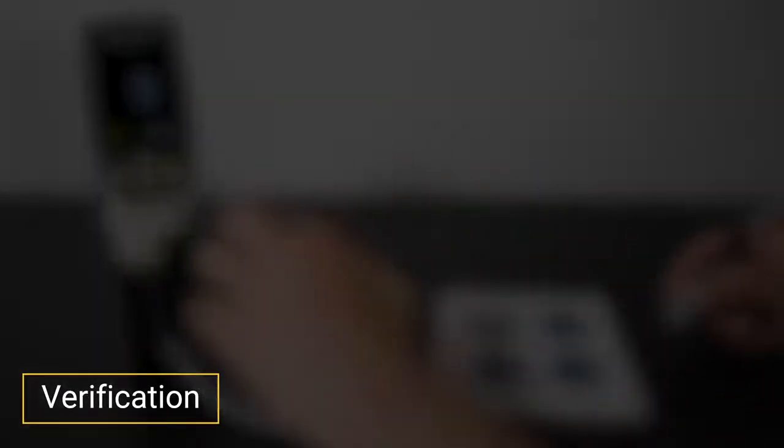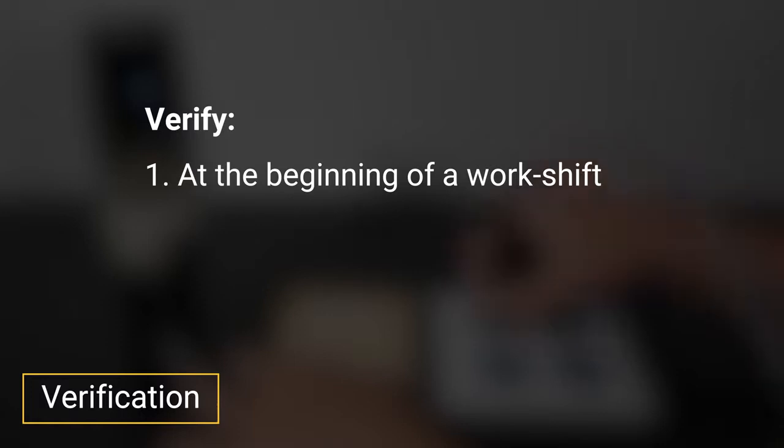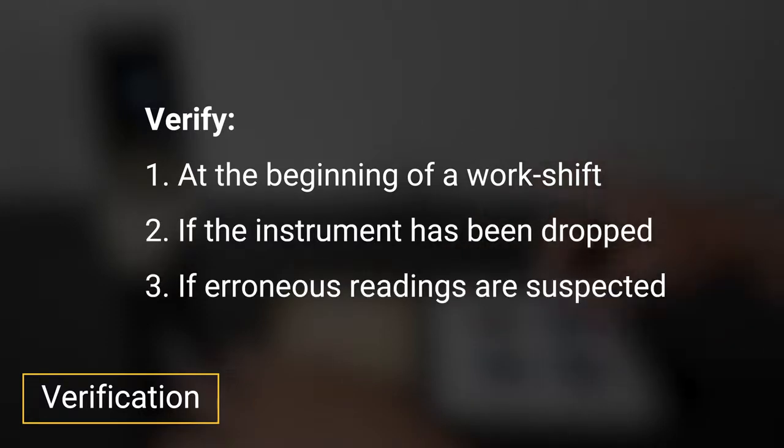Step 2: Verification. Verification is typically performed at the beginning of a work shift, if the instrument has been dropped, or if erroneous readings are suspected. It ensures that the PosiTector 6000 is measuring accurately at the time of use.